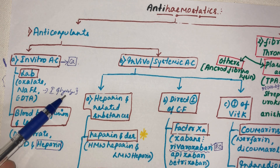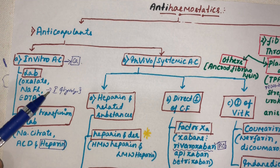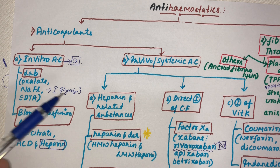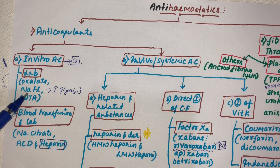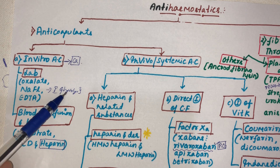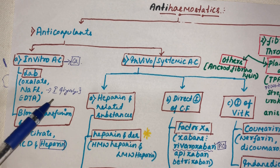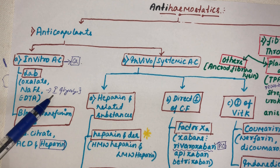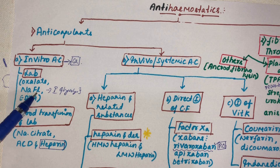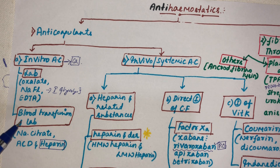While inhibiting glycolysis is harmful in vivo, for diagnostic purposes it is actually beneficial — because glucose will not get metabolized, allowing accurate glucose estimation. Therefore, the preferred anti-coagulant for glucose estimation is sodium fluoride. EDTA also combines with calcium and cannot be given inside the body.